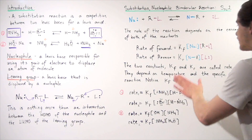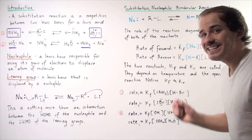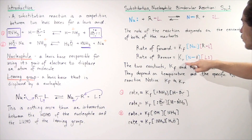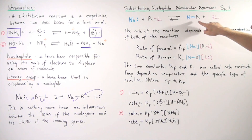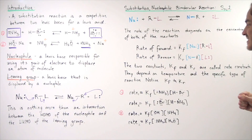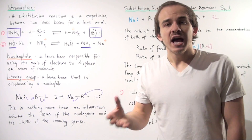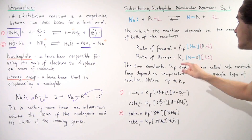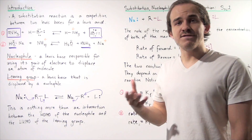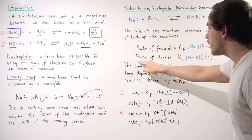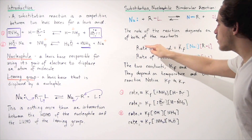Now the rate of the reverse reaction is given by a different rate constant KR, where F simply means forward and R means reverse. We take the concentration of the products and multiply them by one another. The two constants KF and KR are called rate constants, and they depend on temperature as well as the activation energy — so they depend on the type of reaction taking place. Notice that KF and KR are not necessarily equal; in fact, most of the time they're not equal. Only at equilibrium are the rates of forward and reverse equal.